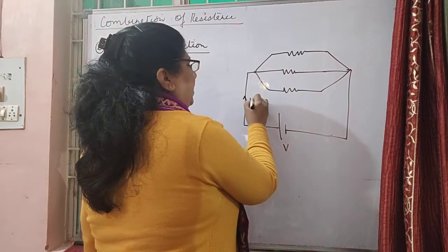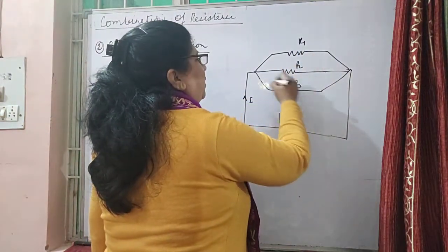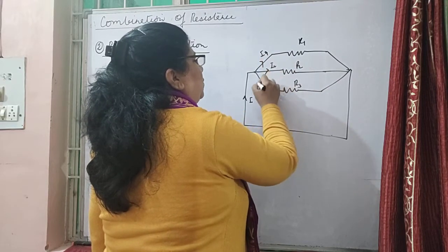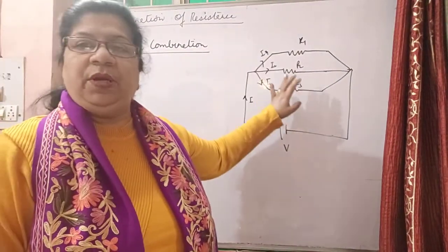What is the difference? Current i is going - this one current is going through r1, this current through r2 is going, and r3 is going. So when the current i is flowing, it is being distributed into three parts.